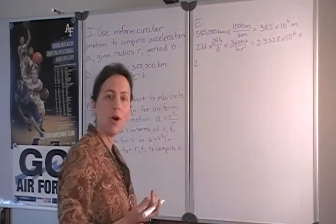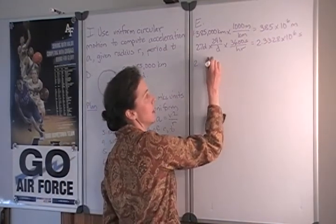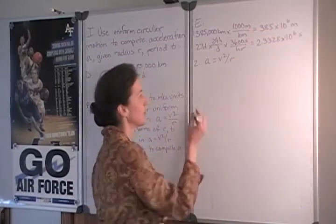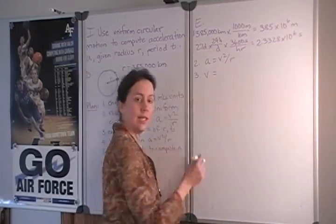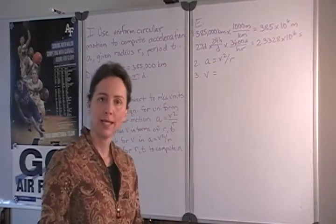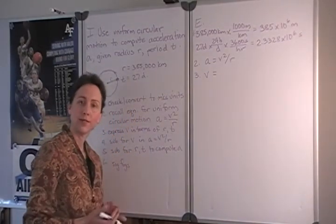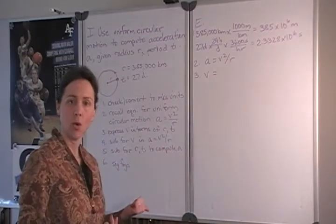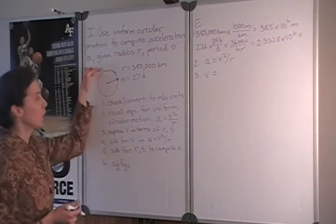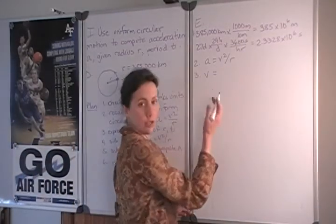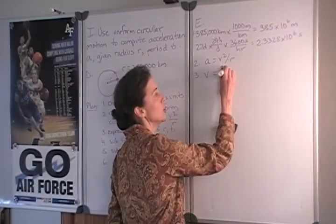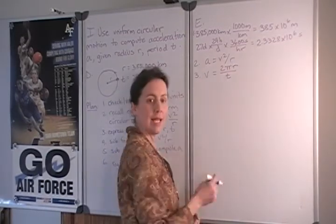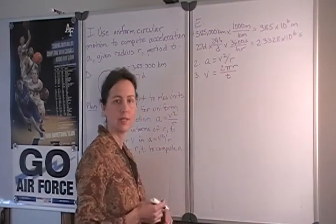Next we will recall the relationship for uniform circular motion that the acceleration equals the square of the velocity over the radius and we need to express that velocity in terms of values that we've been given. Velocity is defined as a distance traveled over a time. The distance in this case is the orbit. If we assume the orbit is circular we can represent it as the circumference of that circle or 2 pi times the radius and then divided by the period or the time it takes to travel that distance will give us the velocity.